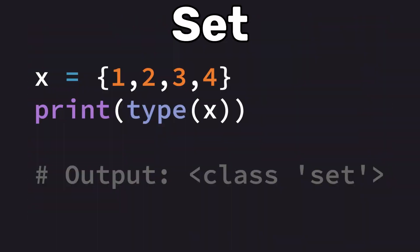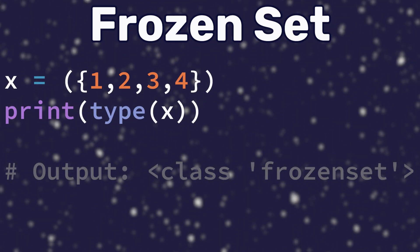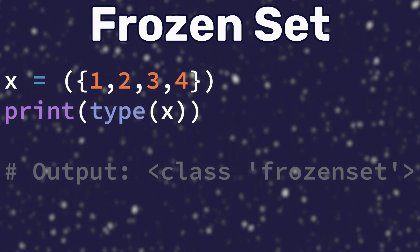Set types such as sets are unordered, mutable collections of unique items. Frozen sets are similar to sets but they're immutable.